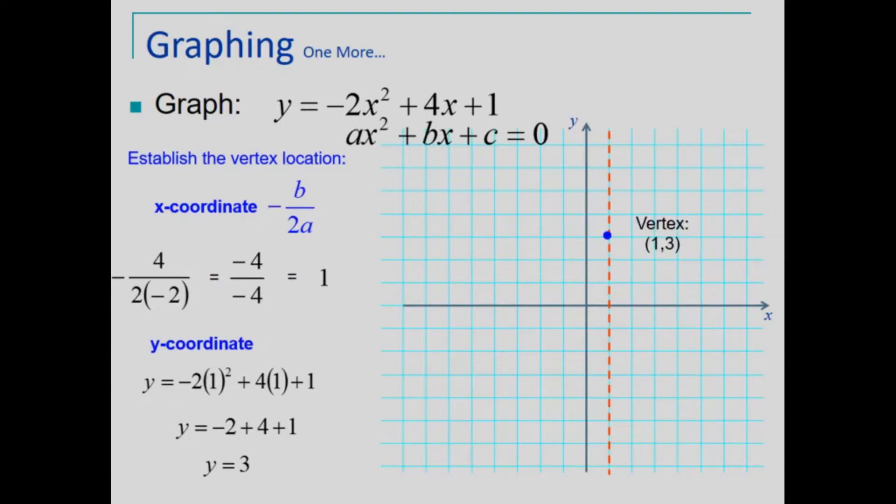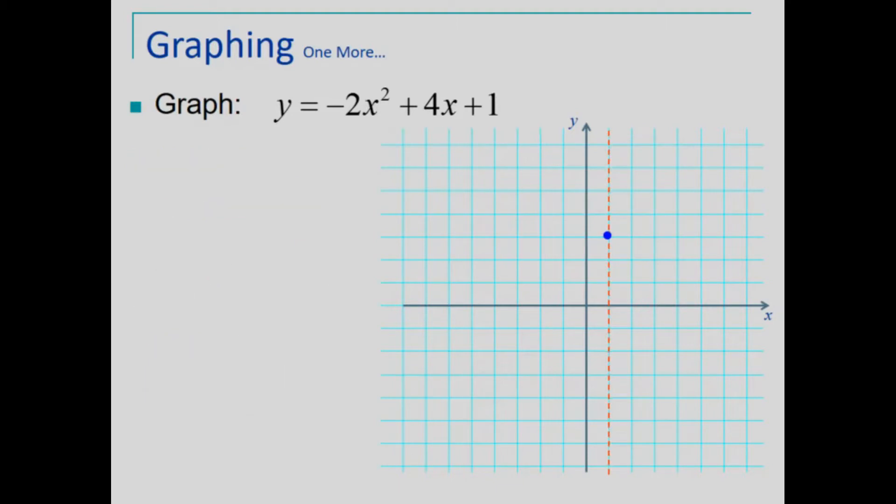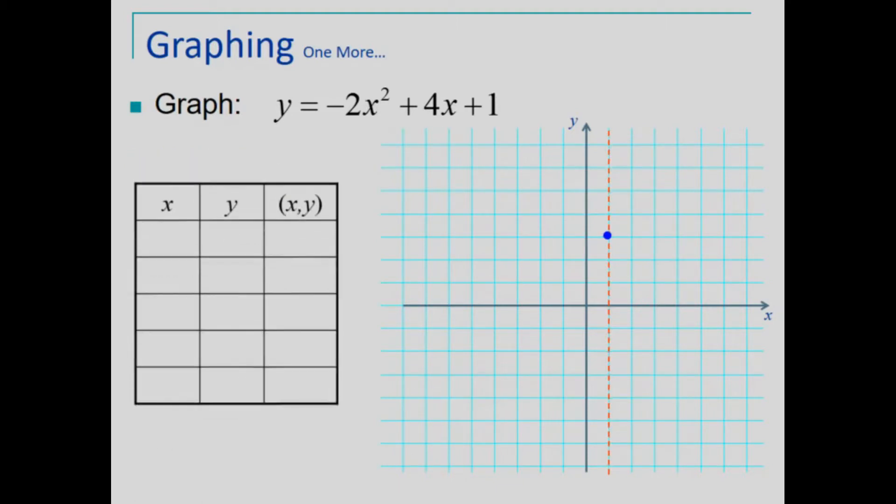We need an additional point, and we can use a table, plugging in values on either side of the axis of symmetry, or let's start by targeting that y-intercept. To find the y-intercept, we let x equal 0. Replacing x with 0 results in y equals 1, the constant term.